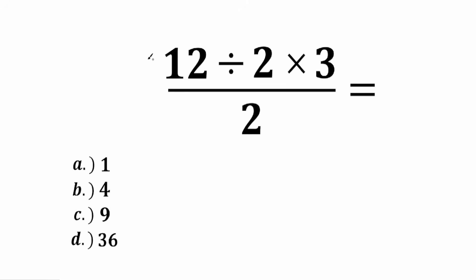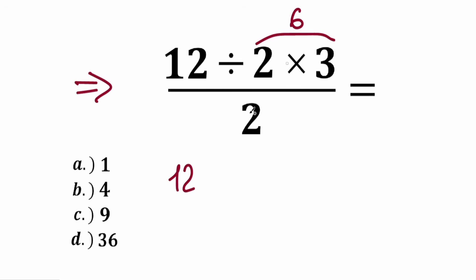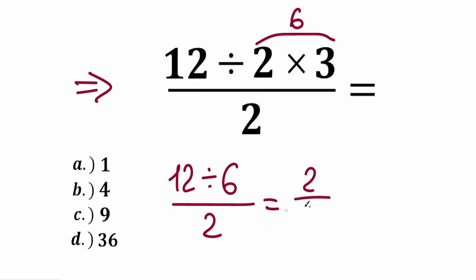The first group of students says: okay, we need to multiply 2 times 3 first. So as a result we have 6, and from here we have 12. So we get 12 divided by 6, and we need to divide it by 2. As a result: 12 divided by 6 equals 2, and we divide this 2 by 2 — so the answer is 1. This is option A.